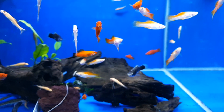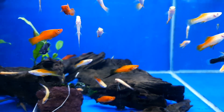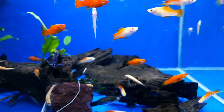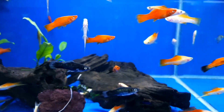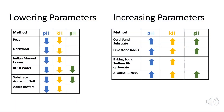So now that you have an understanding of each parameter and their effects, I will go through some ways to adjust these, as you may need to do this depending on the type of fish you want to keep. To naturally lower your pH and KH, you can add things like peat, Indian almond leaves, or driftwood. Using RO/DI water or specialised substrates like plant and shrimp soil will also do this, and lower your GH additionally.